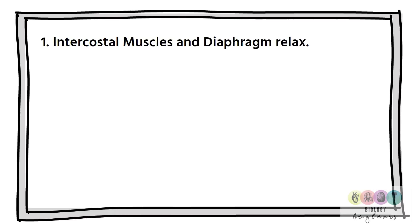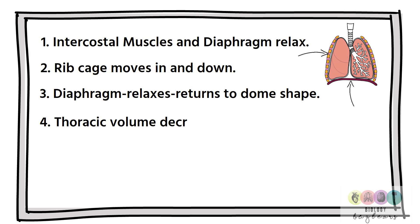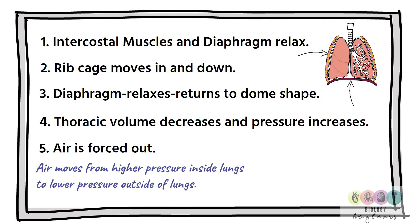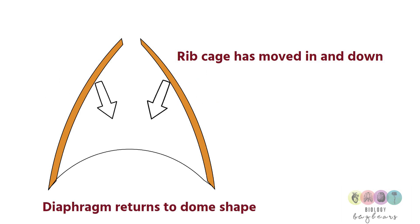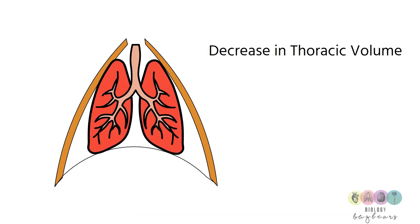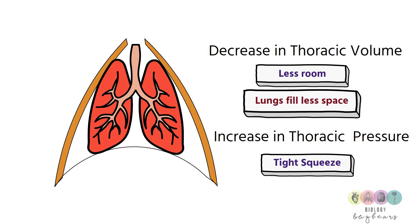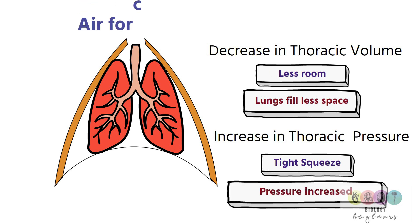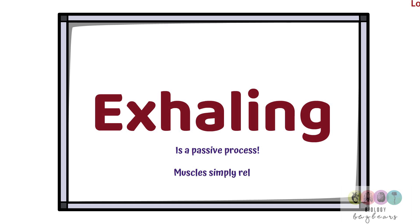Now exhaling: the intercostal muscles and the diaphragm relax. The rib cage moves in and down, and because the diaphragm has relaxed it returns to its dome shape. Thoracic volume is decreased and pressure increases. Air is forced out of the lungs, moving from high pressure to low pressure. There is less room or space in the thorax, so the lungs are squished into a smaller space, causing an increase in thoracic pressure and therefore an increase in pressure in the lungs. Air is forced out. Exhaling is a passive process — there is no muscle contraction involved.